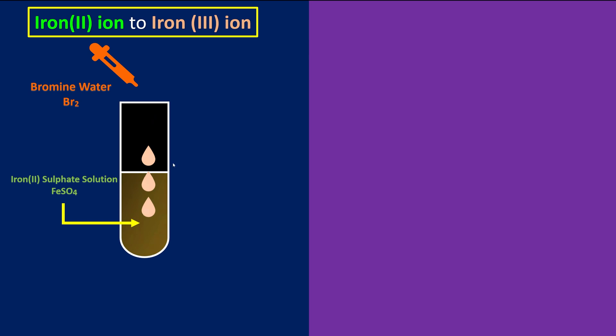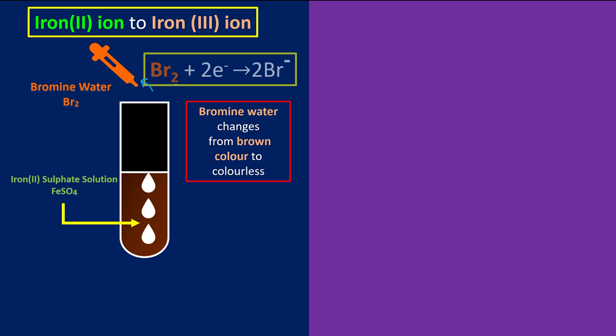So if we look closely, the brown color of the bromine water eventually changed to colorless. This is due to it itself being an oxidizing agent, which means it will undergo the process of reduction. So this is why the bromine molecules will receive the electrons to become bromide ions. As we know, when they are in the halide ions, they are colorless.